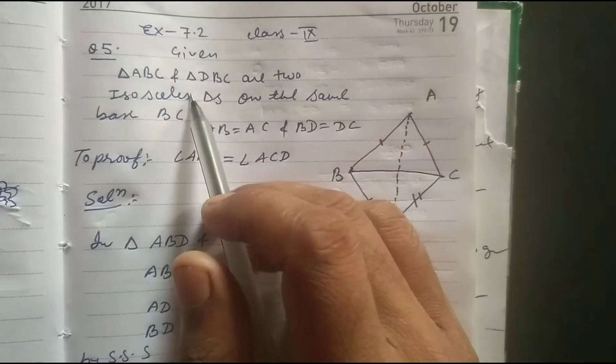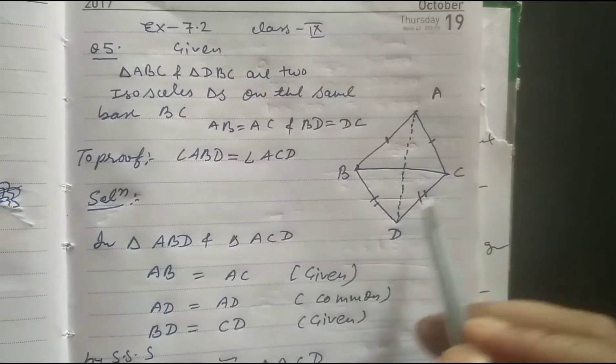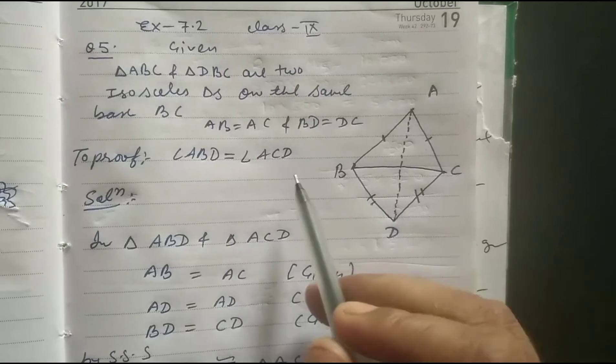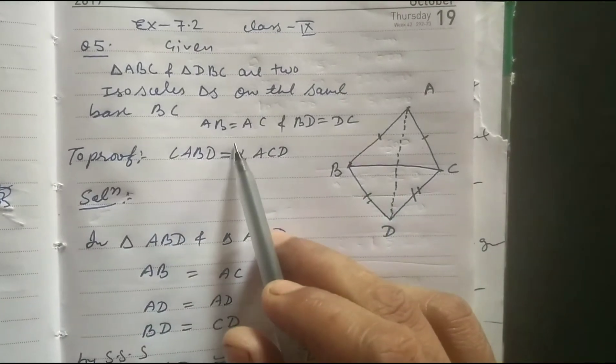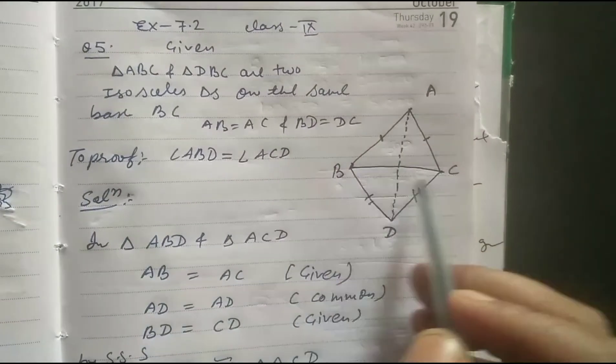Given here triangle ABC and triangle DBC are two isosceles triangles on the same base BC. Given AB equal to AC because ABC is an isosceles triangle.